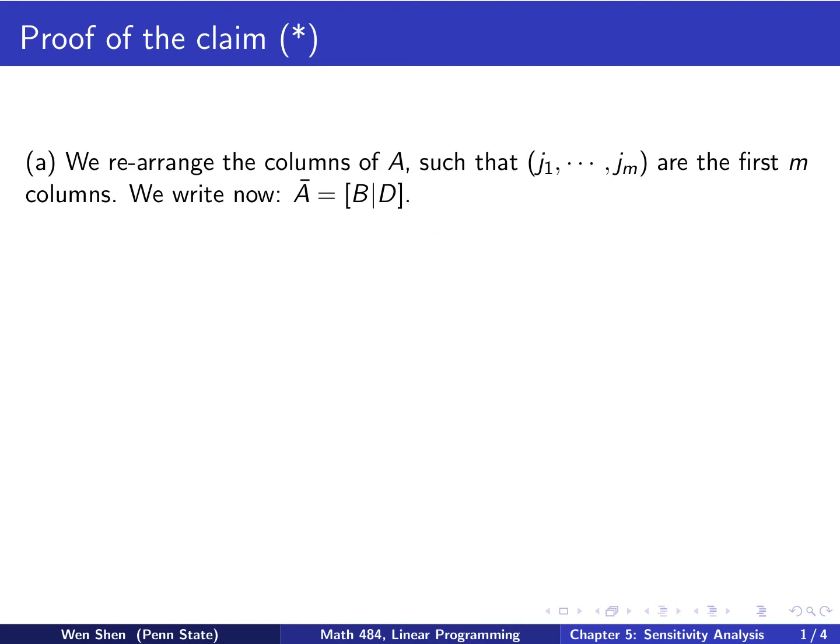After this rearranging, we can rewrite the coefficient matrix A of the initial tableau into two parts. Here the first part is m times m square matrix B, and D denotes whatever is remaining.